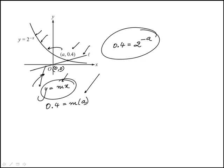So this is 2 to the minus a equals 0.4. So this is 2 to the a. I can take inverse of both sides. This is 2.5, and to find a, that's log base 2 of 2.5.